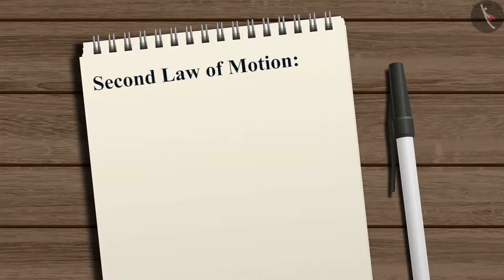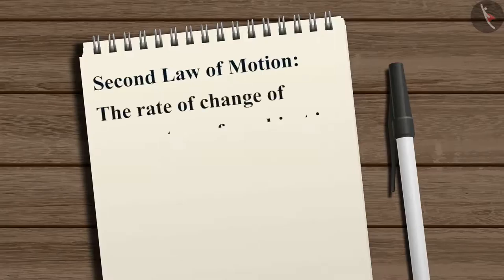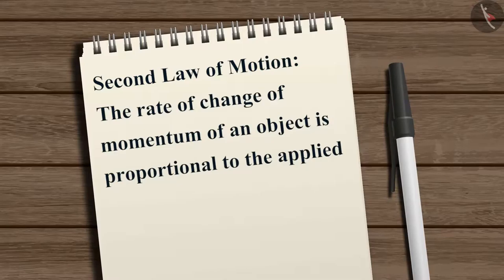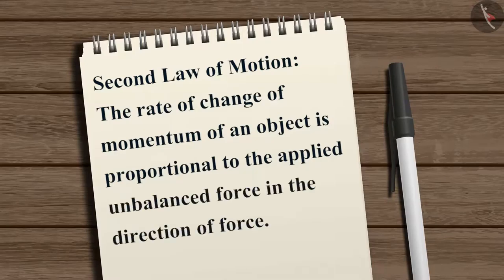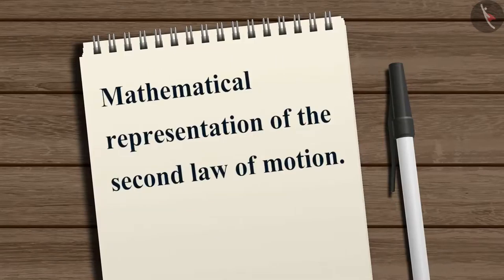The force that needs to be applied to change the momentum of an object depends on the change of momentum with respect to time. Based on this concept, Newton proposed the second law of motion, which states that the rate of change of momentum of an object is proportional to the applied unbalanced force in the direction of force. Now let us study the mathematical representation of the second law of motion.